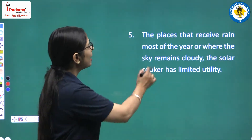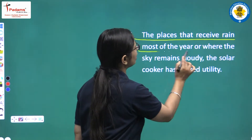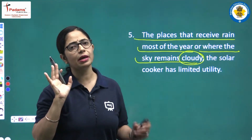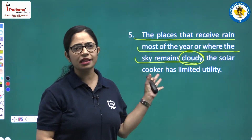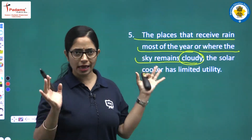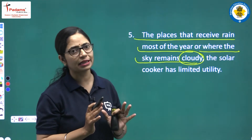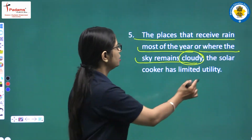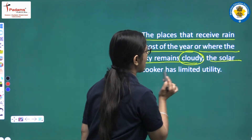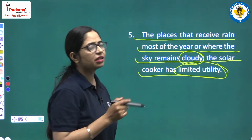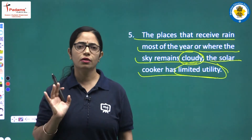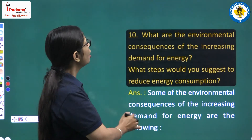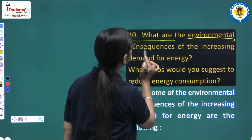Places where the sky remains cloudy for most of the year or where it rains most of the year are places where the solar cooker has limited utility and cannot be effectively used.